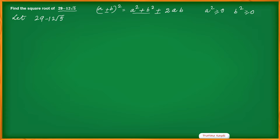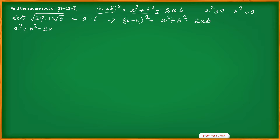Let us say the square root of 29 minus 12 root 5 is equal to a minus b. That means (a minus b) whole square equals a squared plus b squared minus 2ab. Comparing parts: the integer part gives a squared plus b squared equals 29, and the irrational part gives minus 2ab equals minus 12 root 5, so 2ab equals 12 root 5.